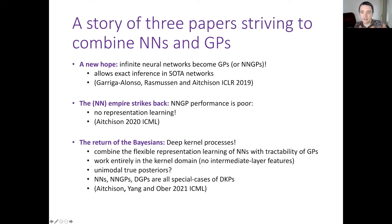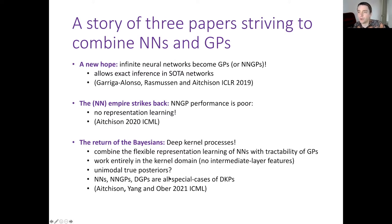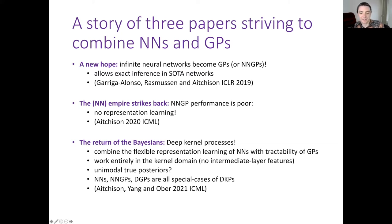The key things about the deep kernel process: it combines an infinite neural-network-like architecture with flexible representation learning. Unlike a deep Gaussian process, it works entirely in the kernel domain with no intermediate layer features. It potentially has unimodal true posteriors, making it relatively easy to approximate. A bunch of models we care about — including NNGPs and deep Gaussian processes — are all special cases of deep kernel processes. This is being published at ICML this year.